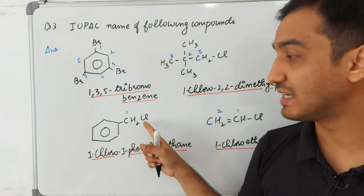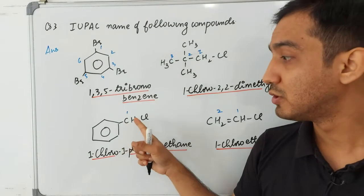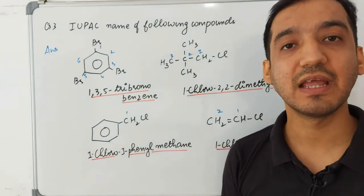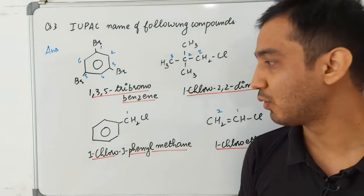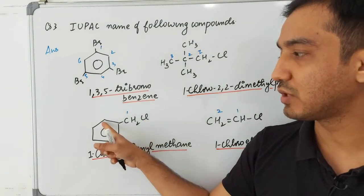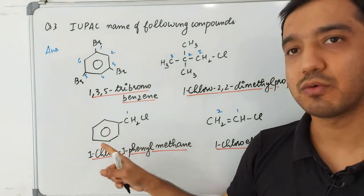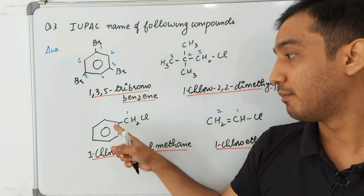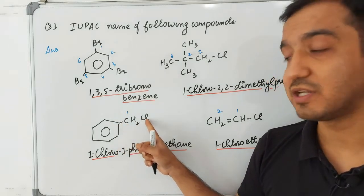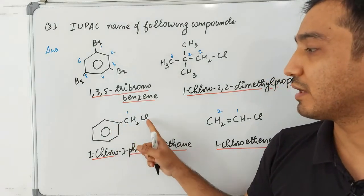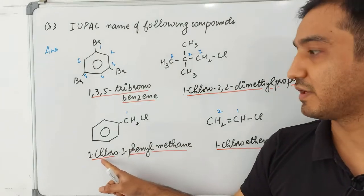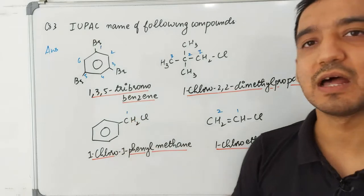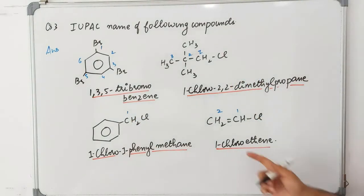In the next compound, a benzene ring is attached to CH2 with chlorine. Since chlorine is not directly attached to the benzene ring, the benzene ring becomes a substituent called phenyl. So the name is 1-chloro-1-phenylmethane — one carbon is methane, with one chloro and one phenyl group.